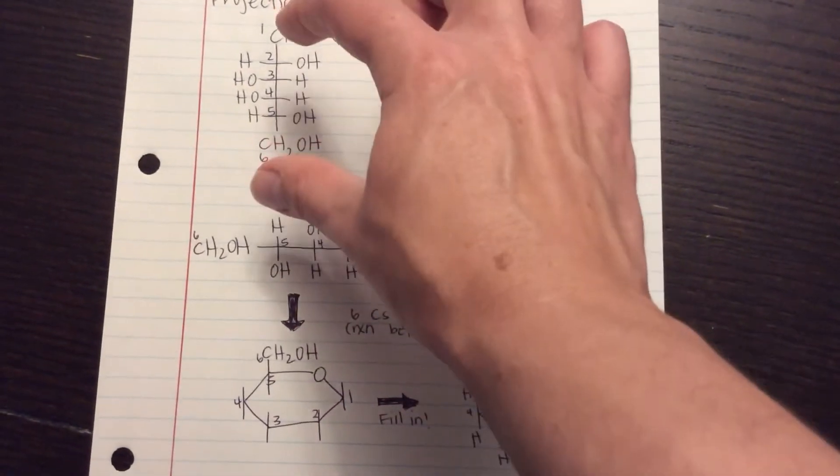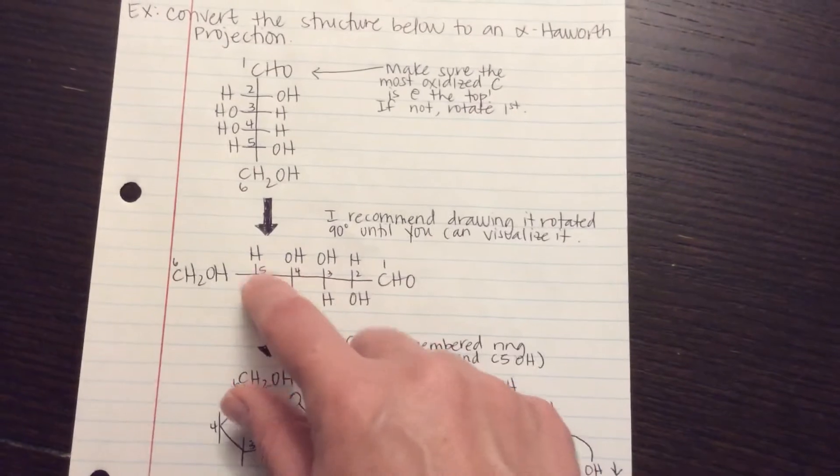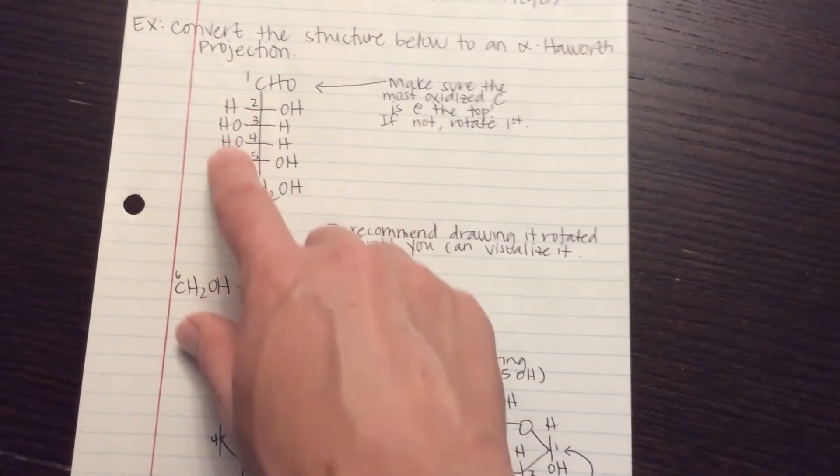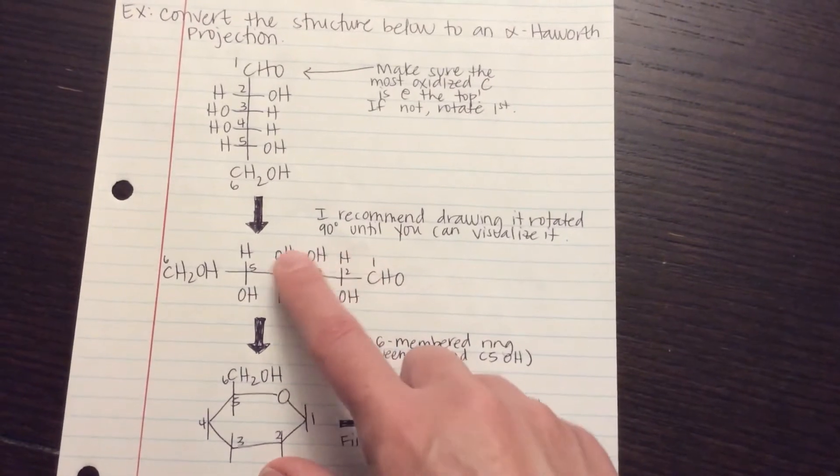I recommend before you're good at it that you take this and just literally rotate it. So redraw it: 1, 2, 3, 4, 5, 6. And now anything that's on the left is now on the top. All right. So H, OH, OH, H.